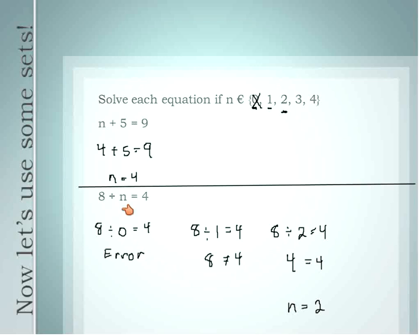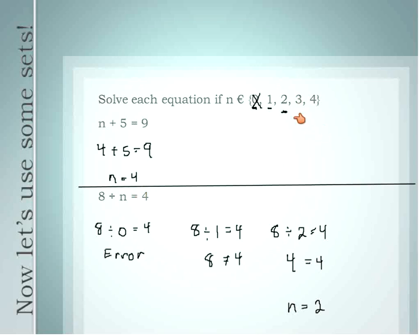With some equations you could get multiple answers, but with straightforward equations like this you're going to get one solution. We could substitute the values of 3 and 4 to test: 8 divided by 3 is definitely not 4, and 8 divided by 4 is 2, not 4. Sometimes you can test values in your head, but when submitting work you want to show all of your work.